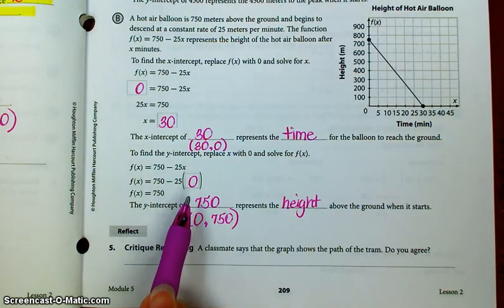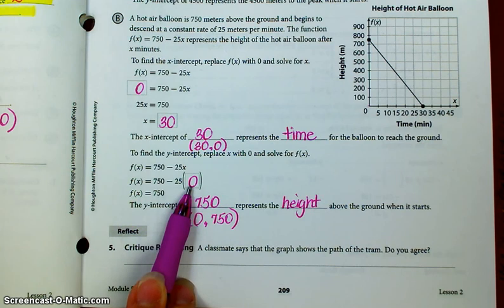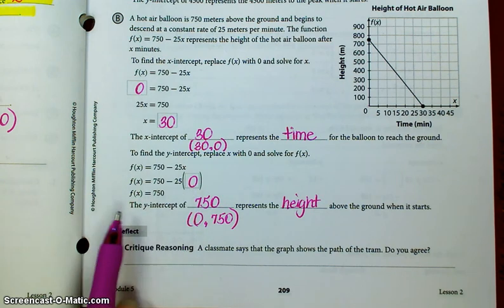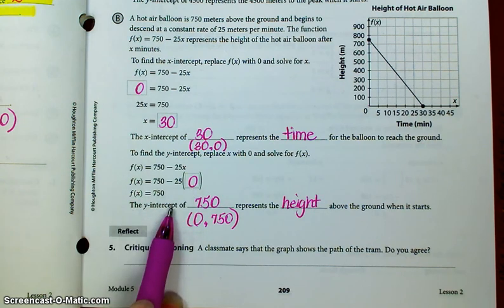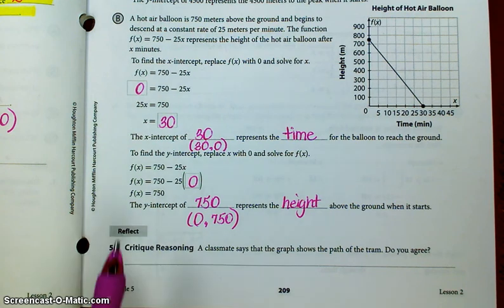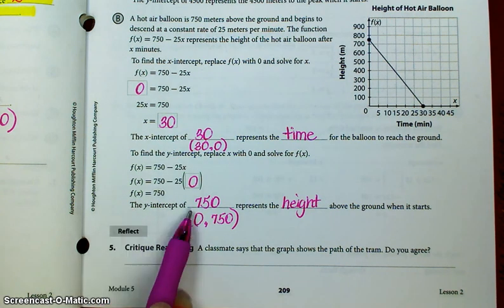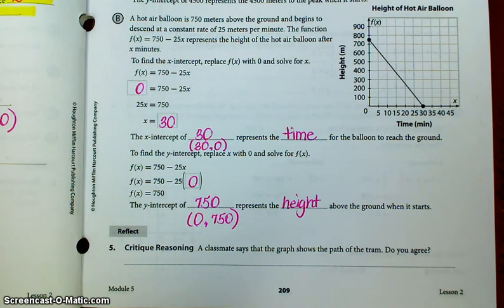All right, we replace x with 0 if we want the y-intercept. And then solve for y, or in this case, they're calling it f(x). The y-intercept of 750 represents the height above the ground when the hot air balloon starts. And there is your ordered pair.